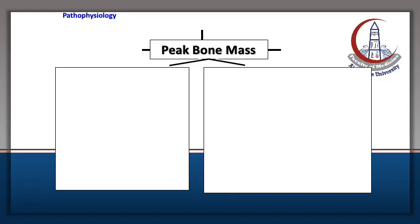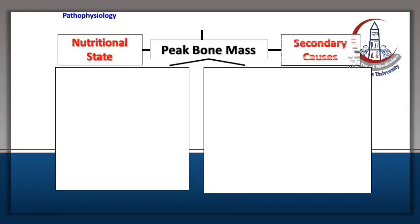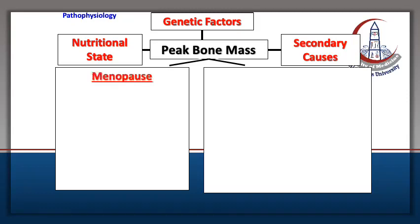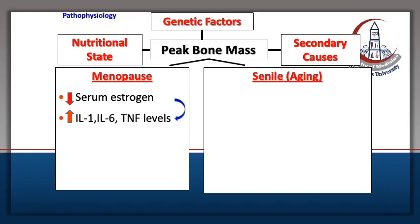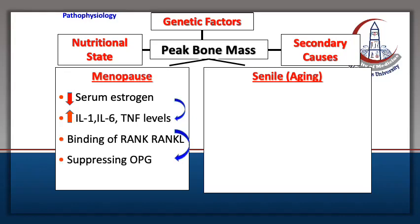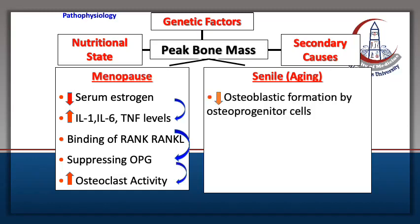There is an interaction between nutritional state, secondary causes, and genetic factors, which together determine the peak bone mass. During menopause, decreased serum estrogen increases interleukins 1 and 6 and tumor necrosis factor, which bind RANK and suppress osteoprotegerin, leading to increased osteoclastic activity and bone resorption. In old age, osteoblast formation and function are both decreased.